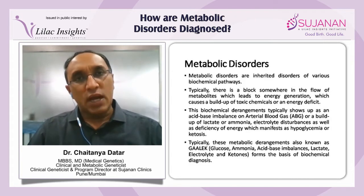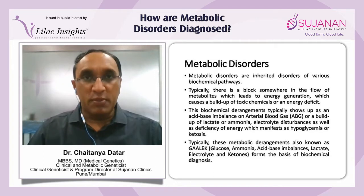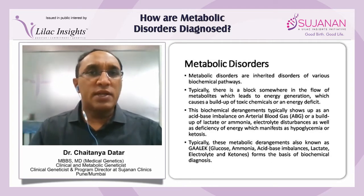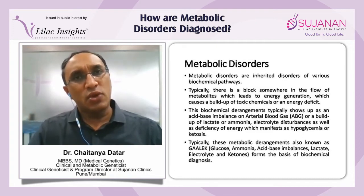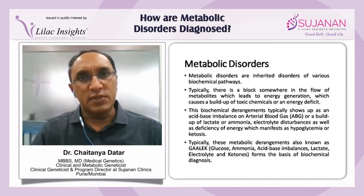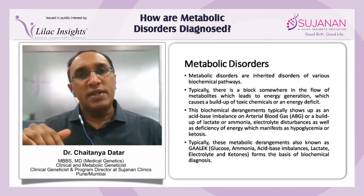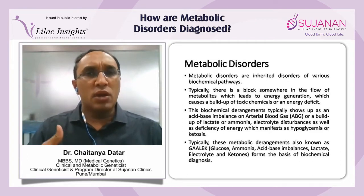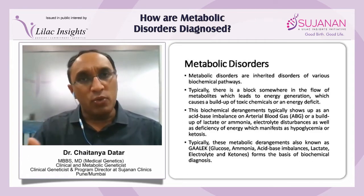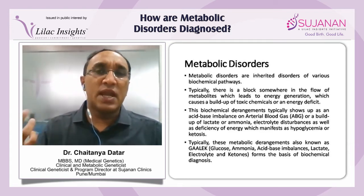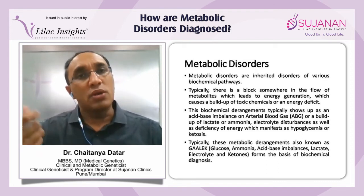Metabolic disorders are inherited disorders of various biochemical pathways. Typically, there is a block somewhere in the flow of metabolites which are leading to energy generation. This causes a buildup of toxic chemicals or an energy deficit. These biochemical derangements typically show up as acid-base imbalances on ABG, or a buildup of lactate or ammonia, electrolyte disturbances, as well as a deficiency of energy manifesting as hypoglycemia or ketosis.